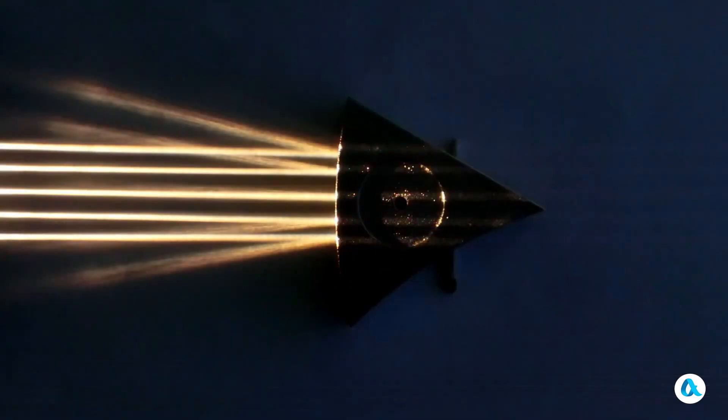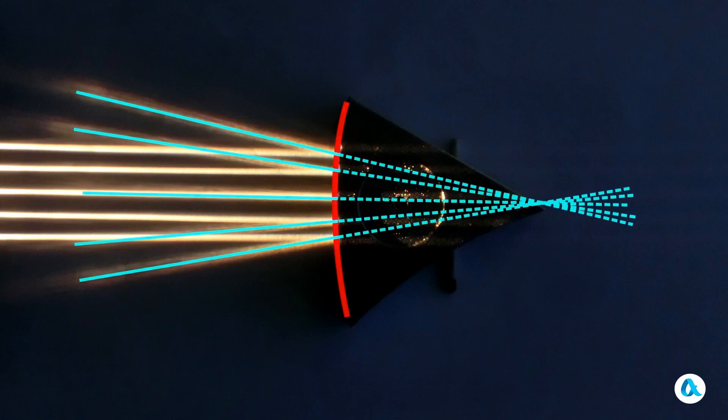It can be seen that after reflection, the rays themselves diverge, but their extensions converge at one point behind the mirror. And this point is called the focus of a convex mirror.